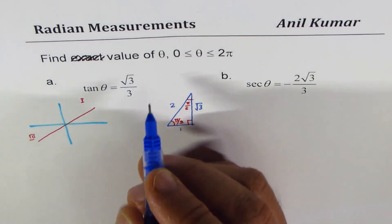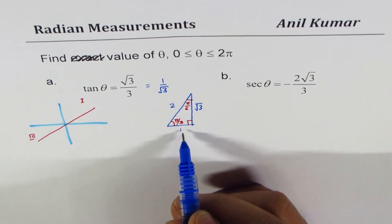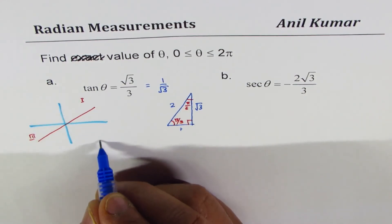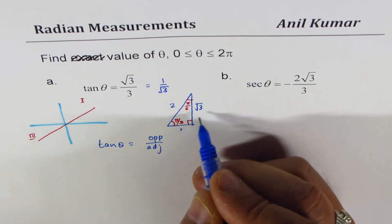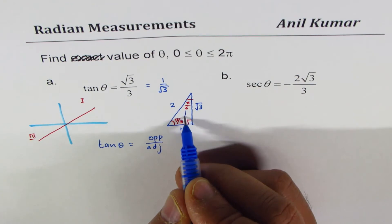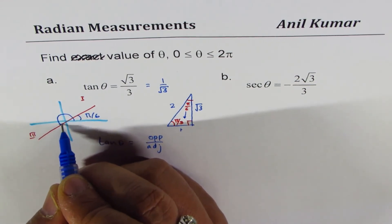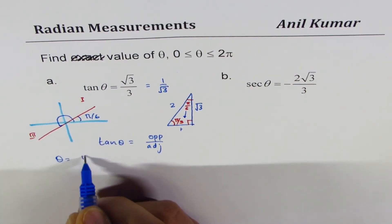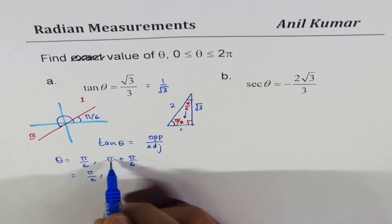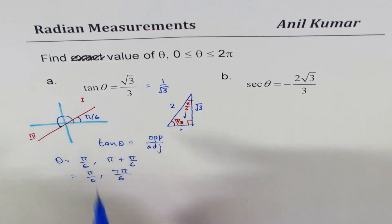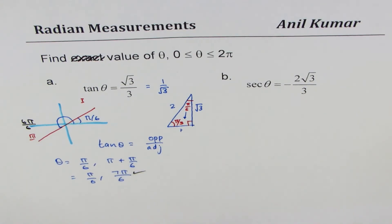Writing √3/3 is the same as 1/√3. Tan is opposite over adjacent, so opposite over adjacent = 1/√3, meaning the related acute angle is π/6. The two solutions are θ = π/6 and π + π/6. Since π is 6π/6, one more gives 7, so θ = π/6 and 7π/6.